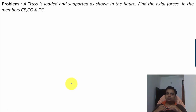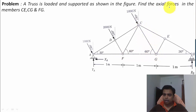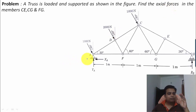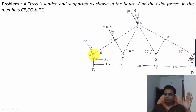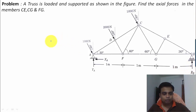A truss is loaded and supported as shown in the figure. Find the axial forces in members CE, CG, and FG. To do this we need to apply the method of sections, but first we'll find the reactions at supports A and B. At A we have a hinged support giving two force components — one vertical and one horizontal — and at B we have a roller support giving a single vertical reaction RB.